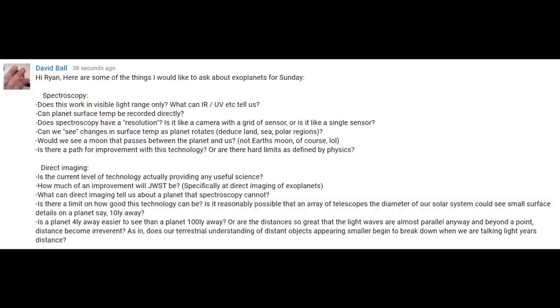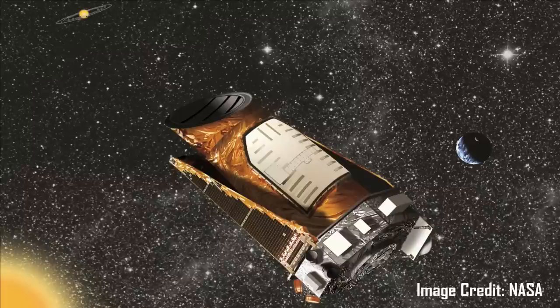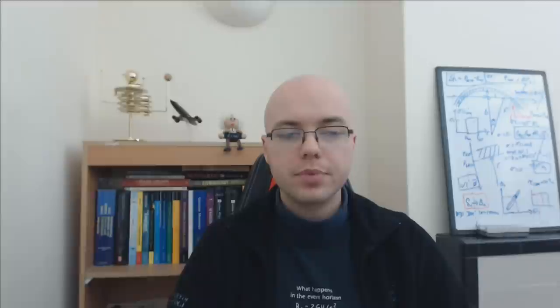There's a question: is a planet four light years away easier to see than a planet 100 light years away? It really depends on the method you're using. If you use the transit method like Kepler, it was only really sensitive to planets between about 600 and 3,000 light years away — basically due to the range in brightness of stars Kepler was designed to look at. Stars too close were too bright; further away than 3,000 light years, they were too dim. So in transmission measurements, you do have distance limits.